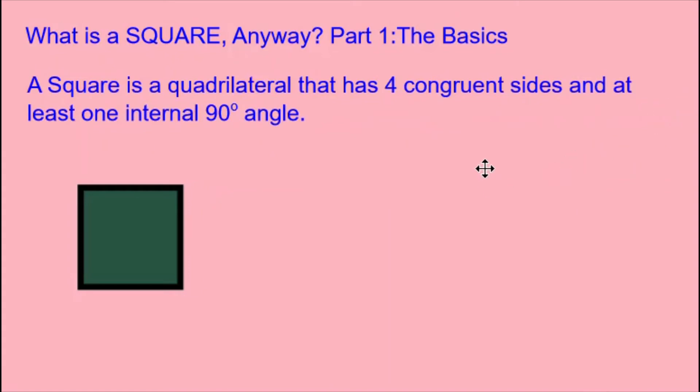A square is a quadrilateral that has four congruent sides and at least one internal 90-degree angle. Four congruent sides means four sides of equal lengths.